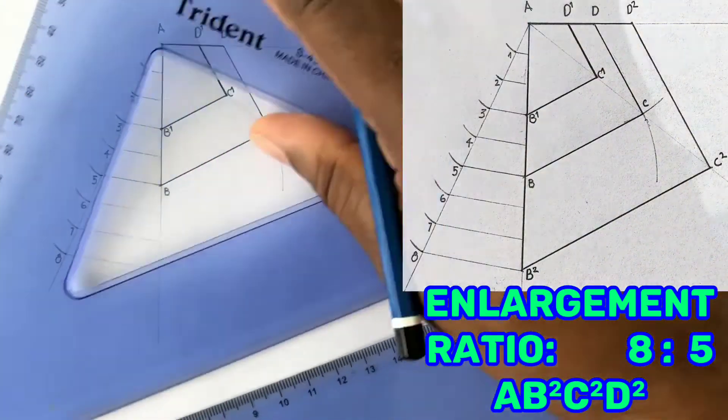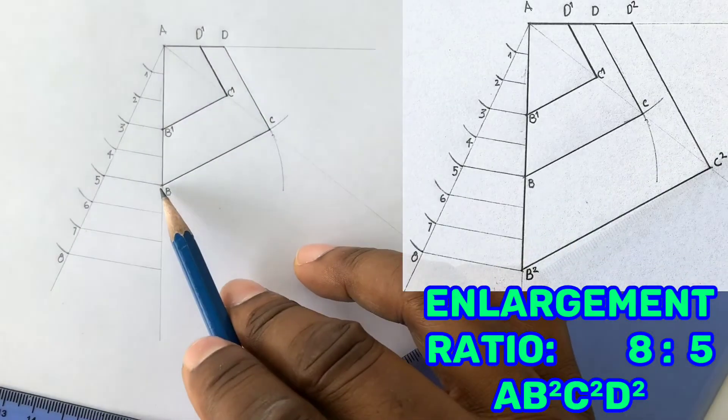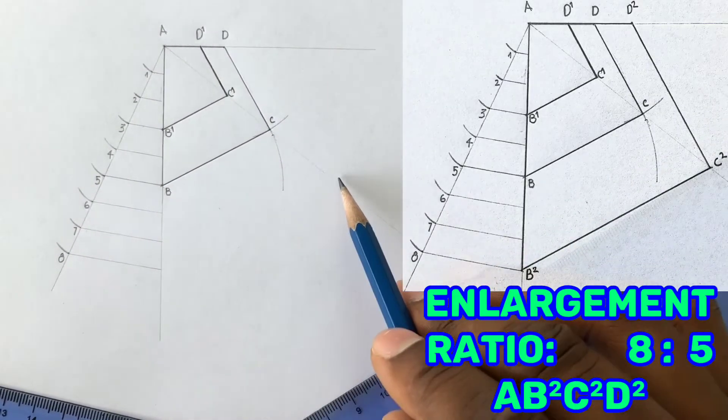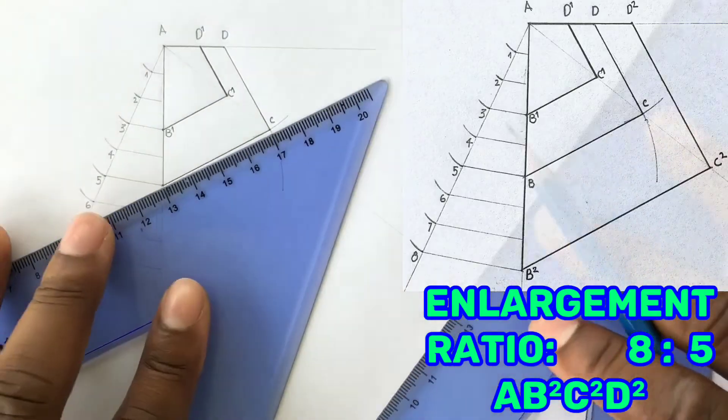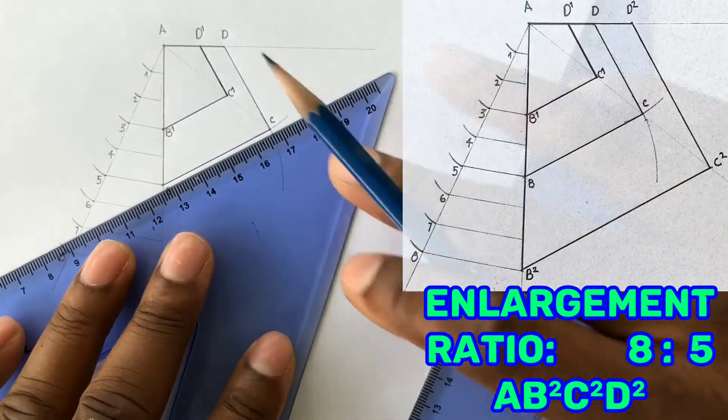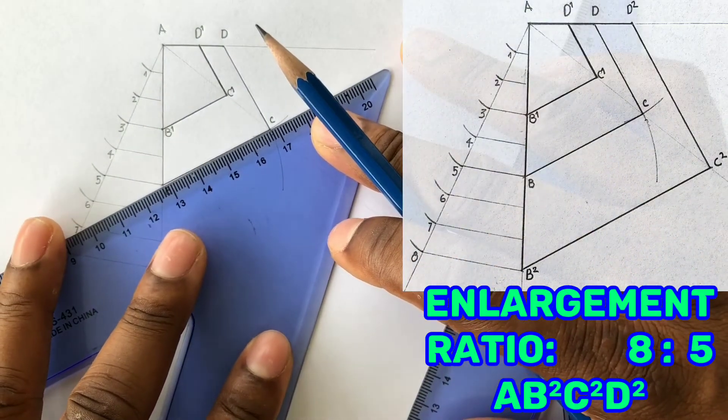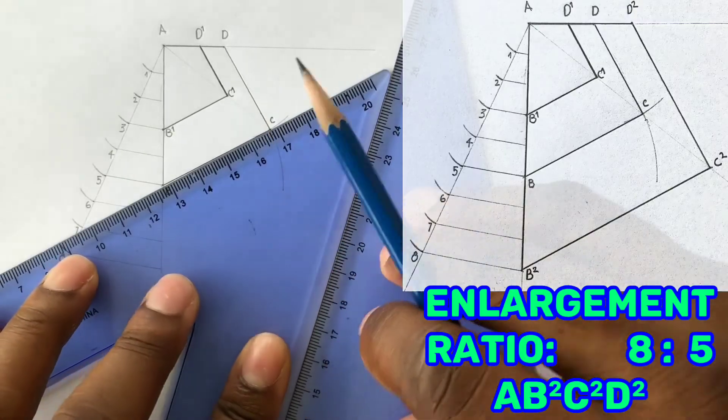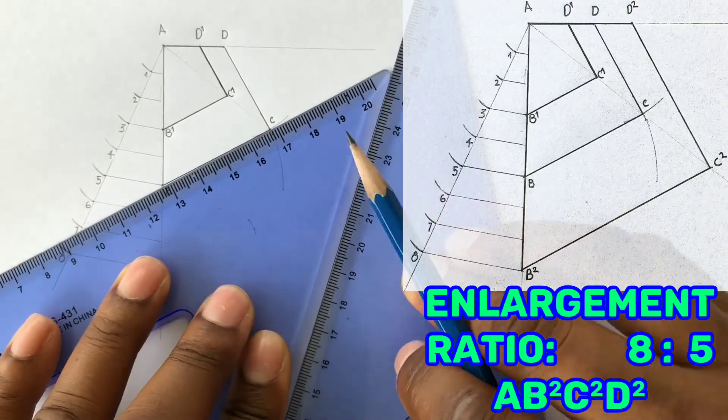Now place a set square along line BC, and from the 8th division on the AB line, you will draw a line parallel to BC to touch the line that was extended from A through point C.